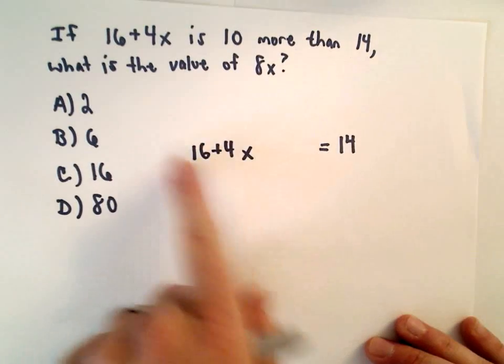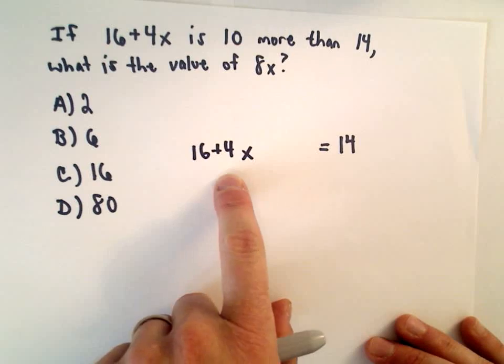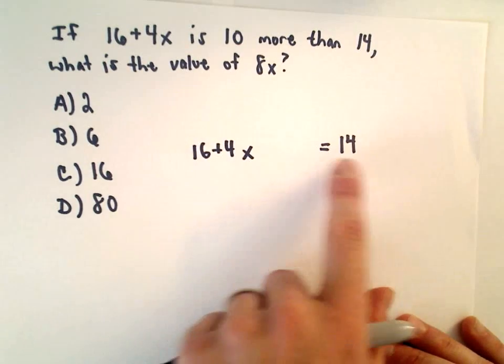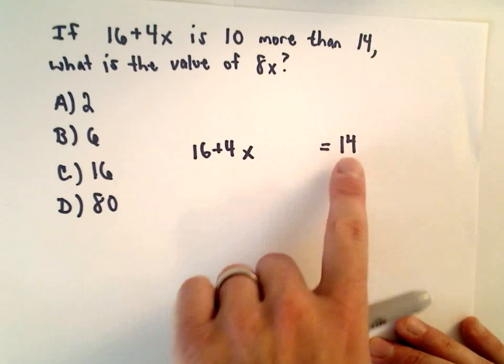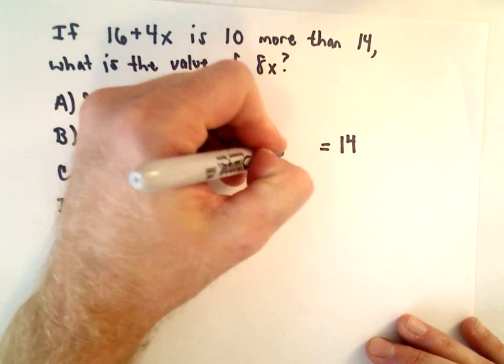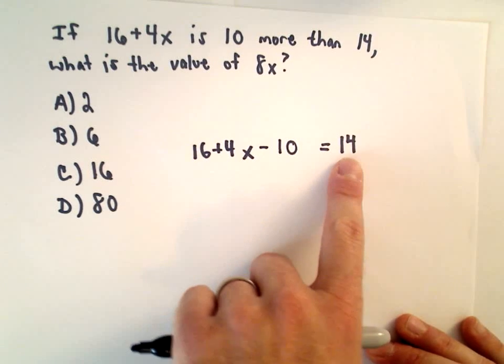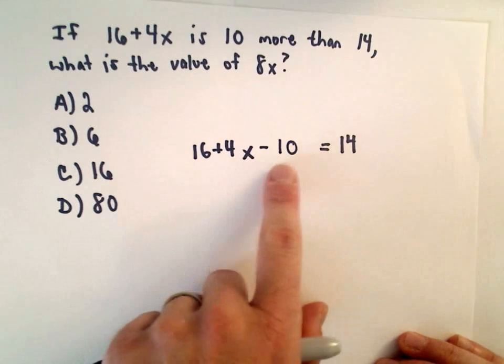I know it's not equal to 14, right? This quantity is 10 more. So to make this side equal 14, since right now 16 plus 4x is 10 more, I would have to subtract 10 from that quantity to make it equal to 14.